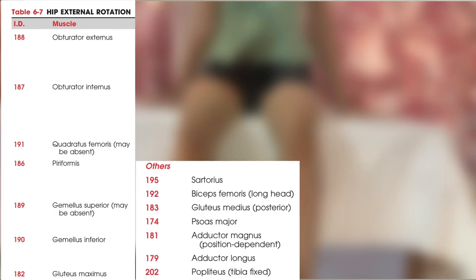The muscles involved in hip external rotation are obturator externus and internus, quadratus femoris, piriformis, gemellus superior and gemellus inferior, gluteus maximus, and some other muscles such as sartorius, biceps femoris (its long head), gluteus medius (its posterior fibers), psoas major, adductor magnus, adductor longus, and popliteus.